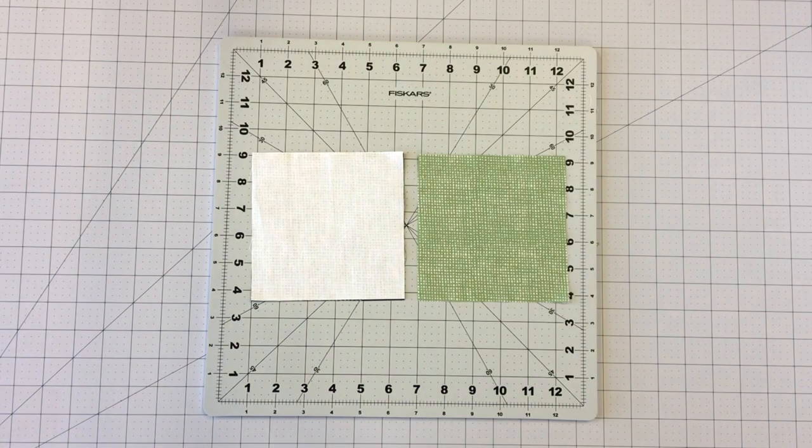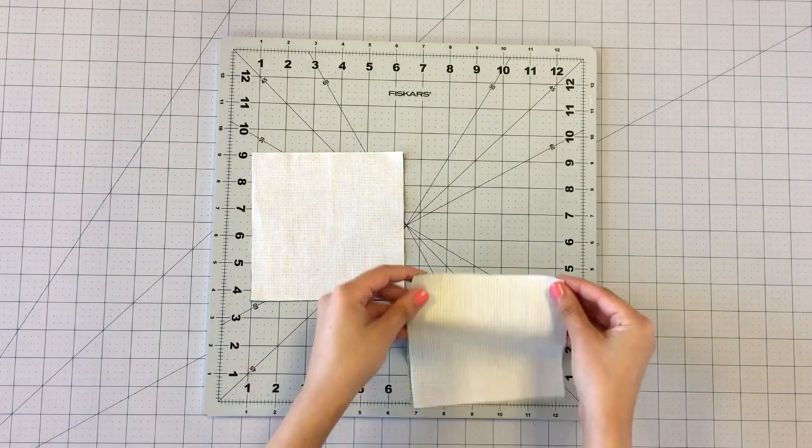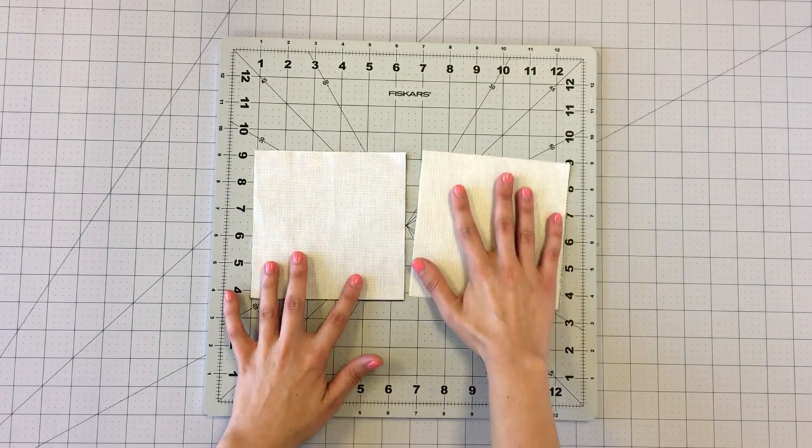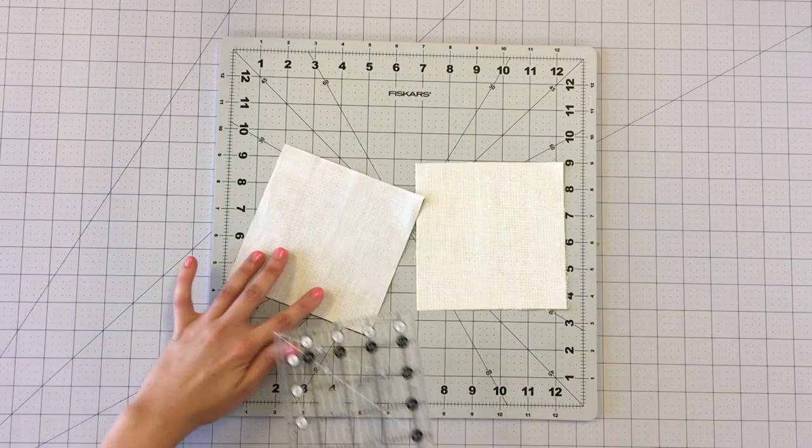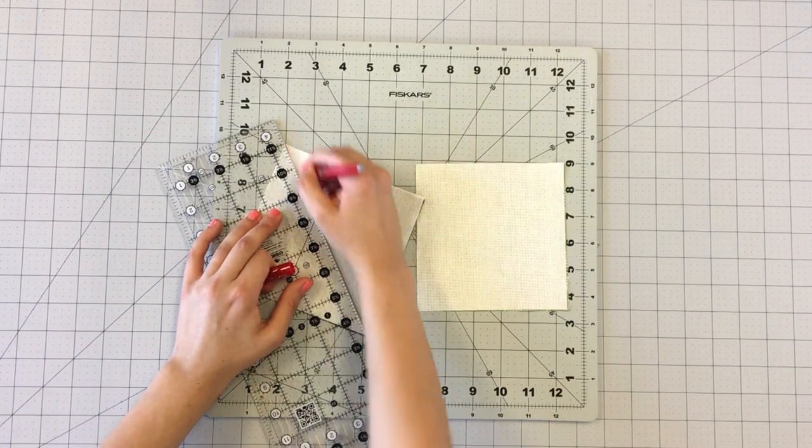To make a BD half square triangle and a CD half square triangle, take a five and a half inch square from fabric B and D. Place a five and a half inch square from fabric D right sides together on both squares. Draw a diagonal line from the top corner to the bottom corner.